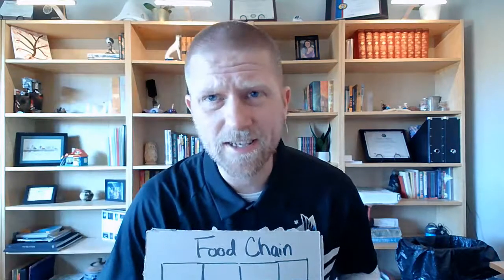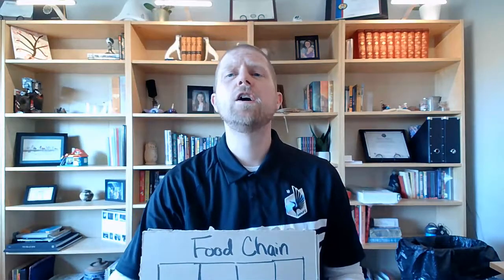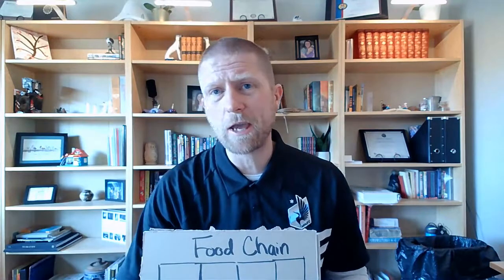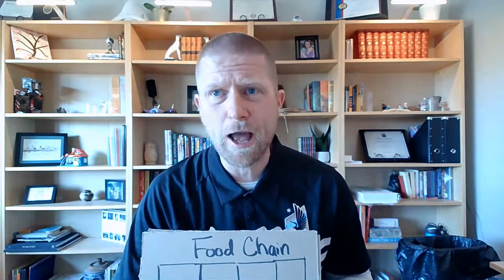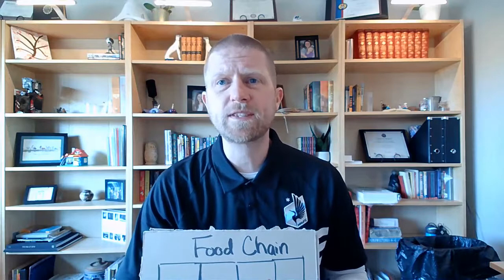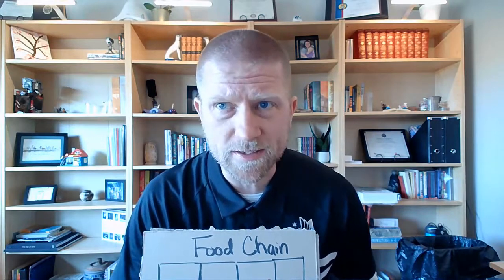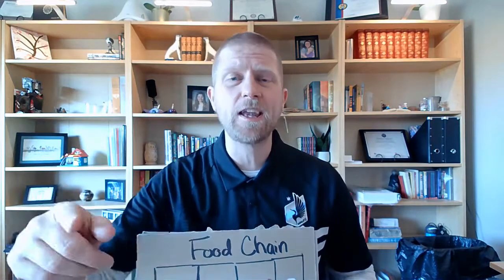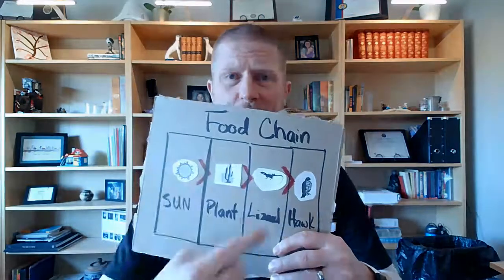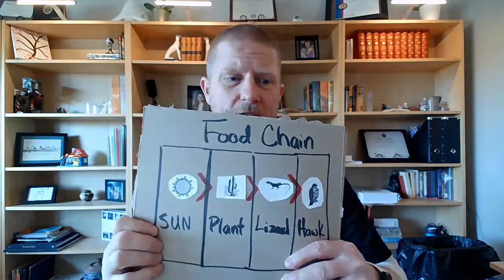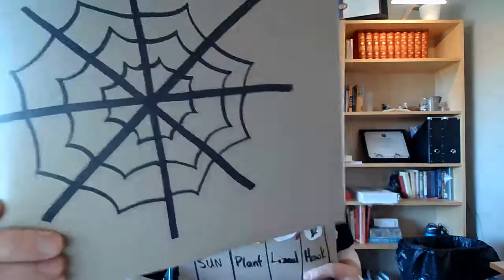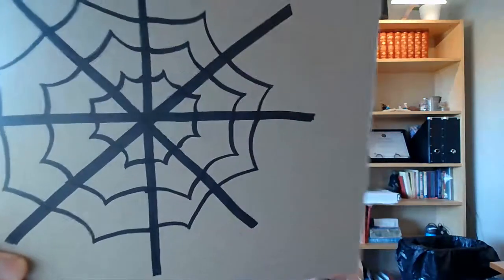Hey there, scientists. Today, you are going to be able to describe the flow of energy from the sun through the organisms in a food web. We've been talking about food chains, and now we're going to be moving on and talking about webs.